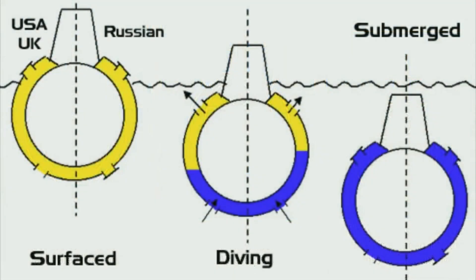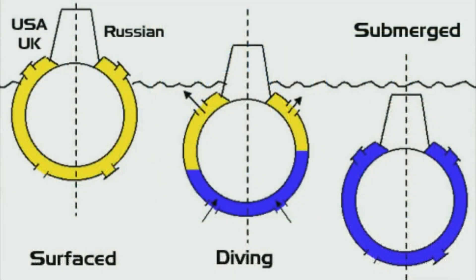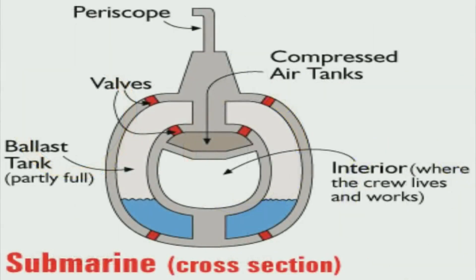Depending what depth they wish to dive, sailors simply adjust the ratio of air and water in their tanks. And when ready to resurface, they blow compressed air into the tanks, forcing the seawater out, lowering the density, and thus causing them to rise back to the surface.